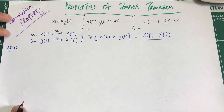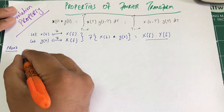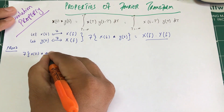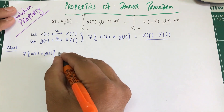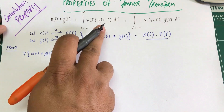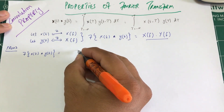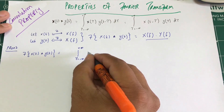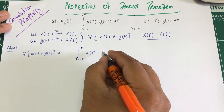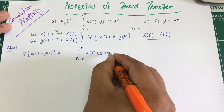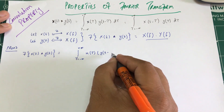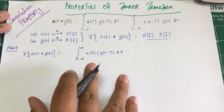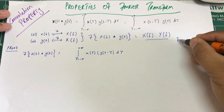In order to make this proof, I'm going to write the definition — the Fourier transform of x(t) convolved with y(t). I'll use the definition of convolution, which means I write the integral as τ goes from negative infinity to positive infinity of x(τ) times y(t minus τ) dτ. This is the function itself.